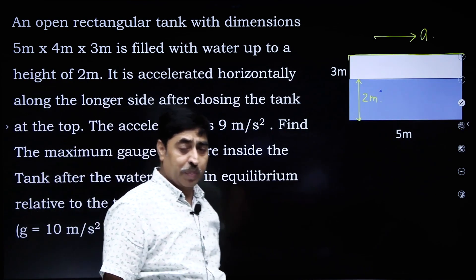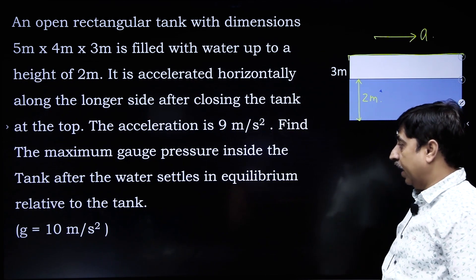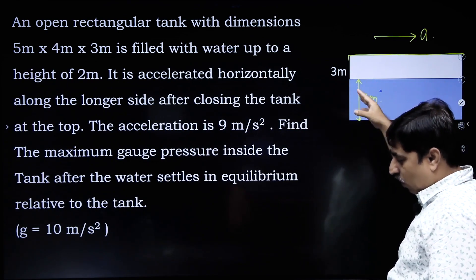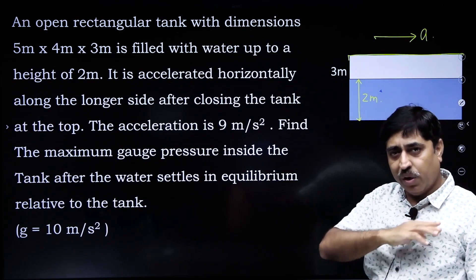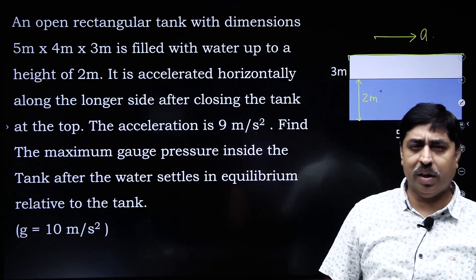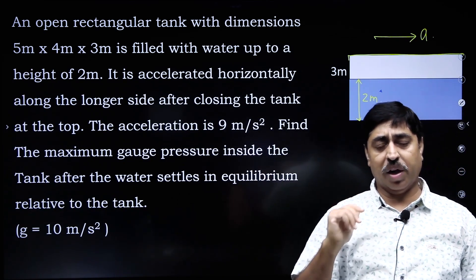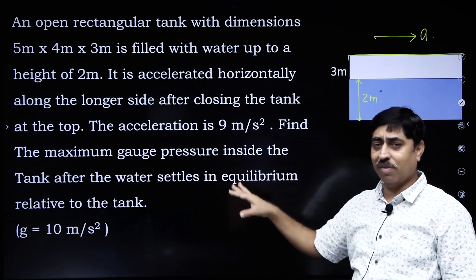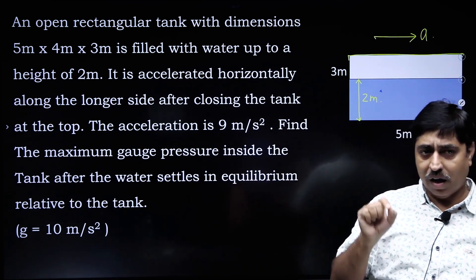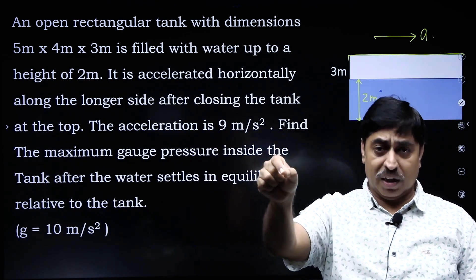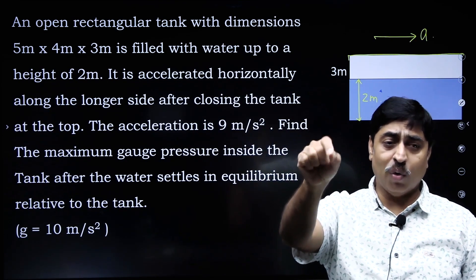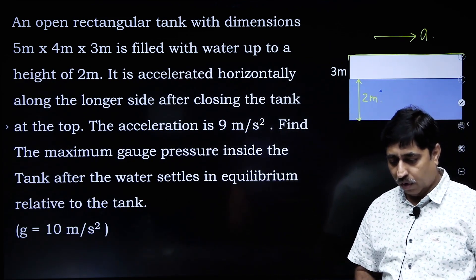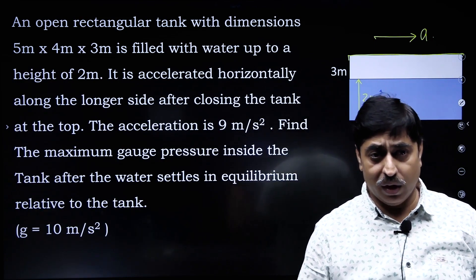The question says: find the maximum gauge pressure inside the tank after the water settles in equilibrium relative to the tank. Initially the water will sway, but if you keep moving with constant acceleration for a long period of time, after some time the water will stabilize inside the tank. At which point is the pressure maximum inside the tank, and what is the value of gauge pressure at that particular point? All of you who want to give it a try, please do.